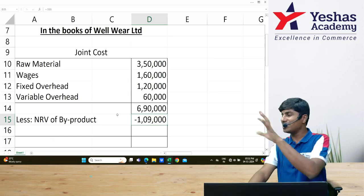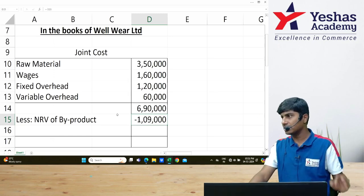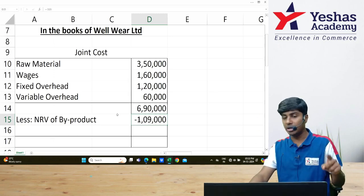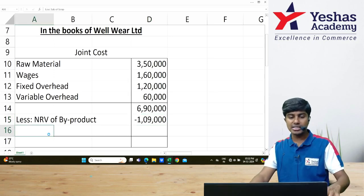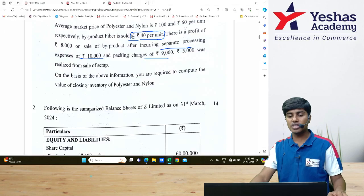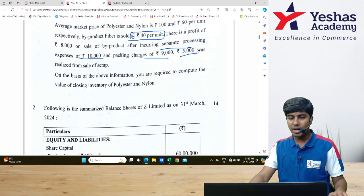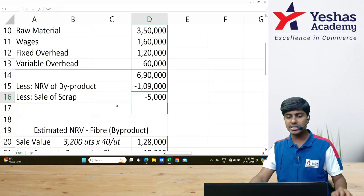This is not the only item. Now, exactly like the question we did in class from 12.2 of our material, we have one more item called scrap value. How much is sale of scrap in this particular question? ₹5,000. I will deduct ₹5,000 as sale of scrap.